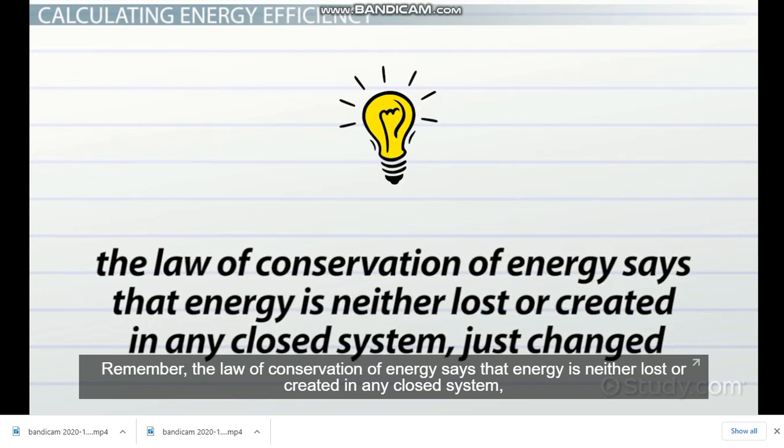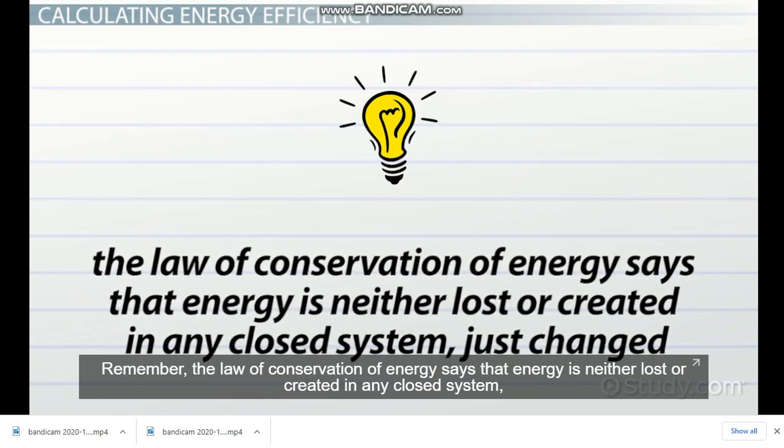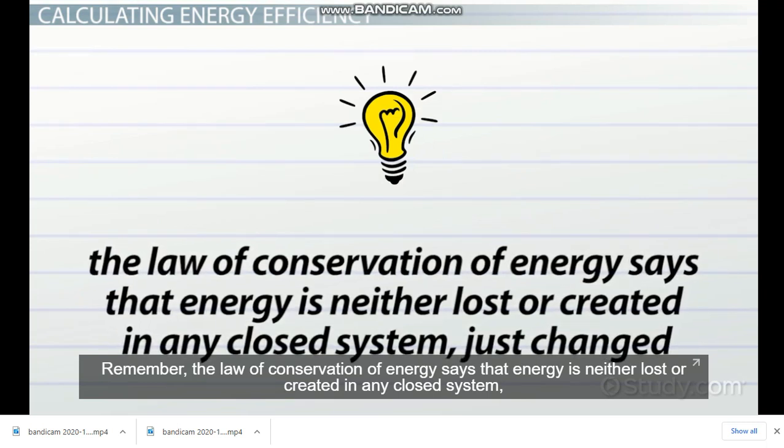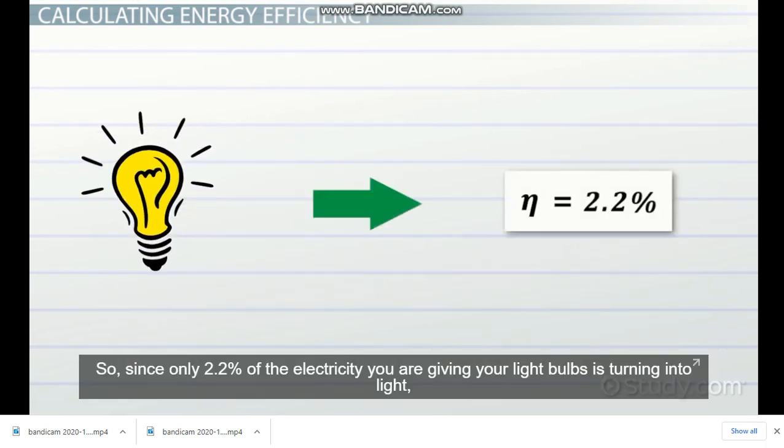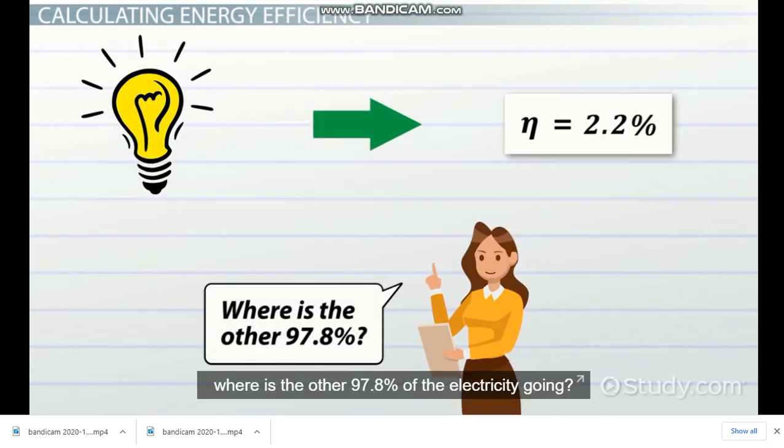Remember, the law of conservation of energy says that energy is neither lost or created in any closed system, just changed. So, since only 2.2% of the electricity you're giving your light bulbs is turning into light, where is the other 97.8% of the electricity going?